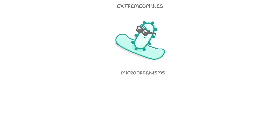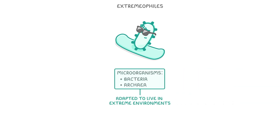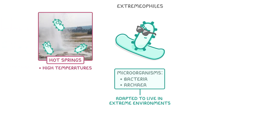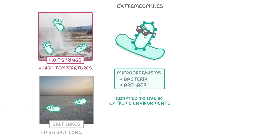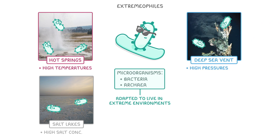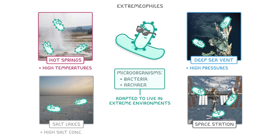The last thing we need to cover are extremophiles, which are microorganisms like bacteria or archaea that are adapted to live in extreme environments. For example, they can live at really high temperatures in hot springs, really high salt concentrations in salt lakes, and at really high pressures in deep sea vents, which are on the bottom of the ocean floor. And in 2017, astronauts even found bacteria on the outside of the International Space Station.